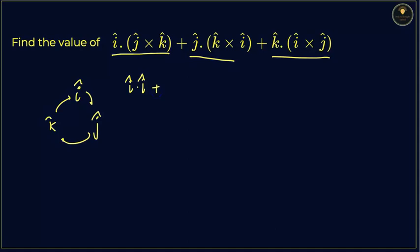Plus, if I cross multiply k and i, I will get j, so you will write the value as j cross j. And the last one, you will write k dot k.